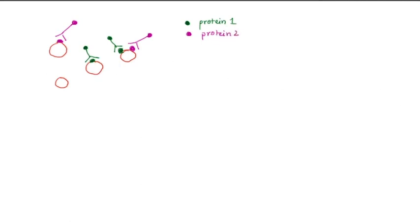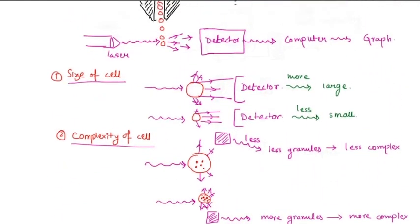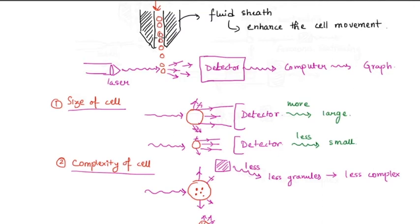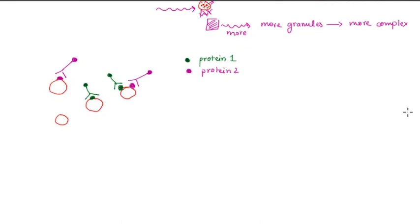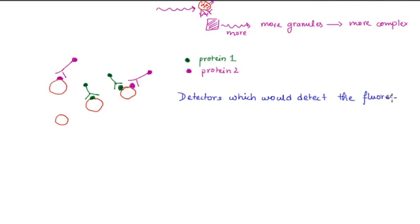We are going to pass these cells through the flow cytometer, and when the detectors are detecting the cell size and complexity, there are also detectors which would detect the fluorescence — that is the fluorescence emitted by the antibodies, specifically by the fluorophore that is bound to the antibodies.